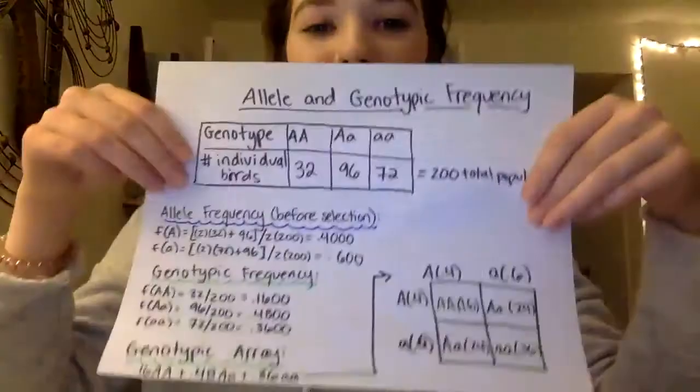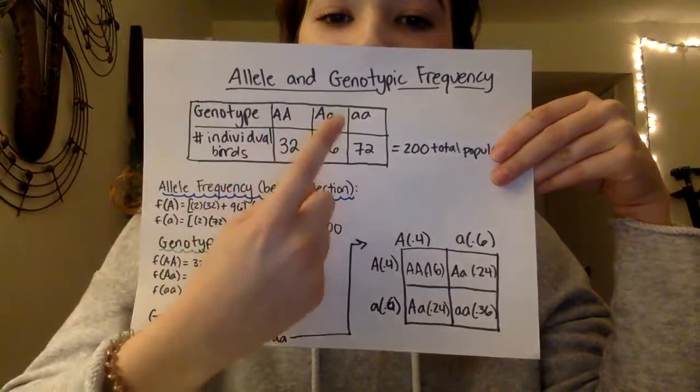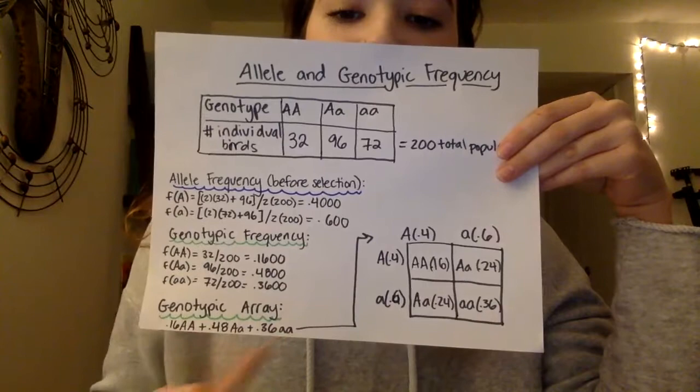However, before these settlers ever came, we have these original allele and genotypic frequencies. Here is our original population of the long beak, medium beak, and short beak. Here are allele frequencies of 0.4 big A and 0.6 little a, our genotypic frequencies, and our genotypic array, also shown in this example.